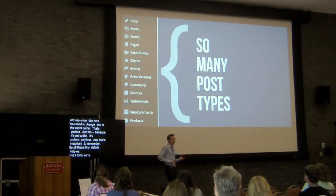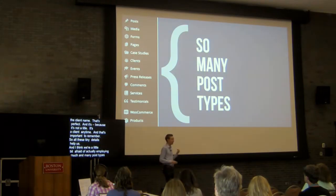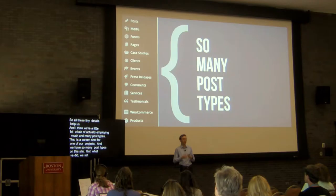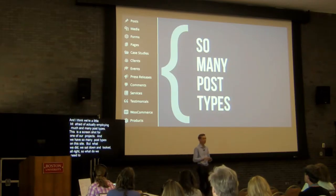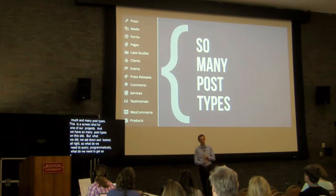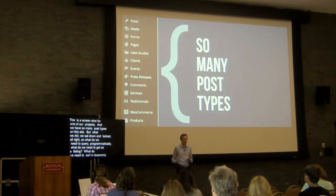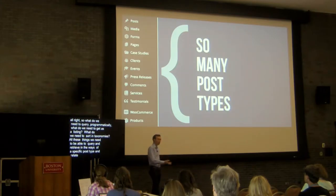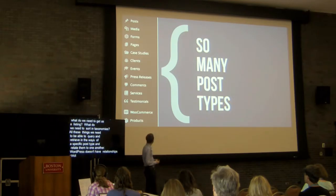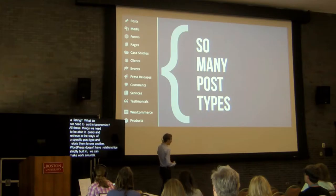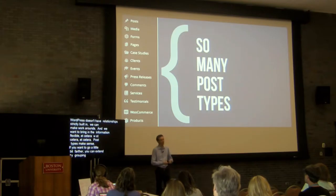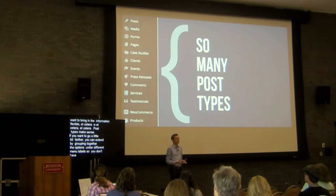I think we're a little bit afraid of actually employing many post types. This is a screenshot of one of our projects — we have so many post types on this site. What we did is sit down and look: what do we need to query programmatically? What do we need to get as a listing? What do we need to sort in taxonomies? All of these things we actually need to query and retrieve in ways specific to a post type. You could also extend this by grouping together the options under a different menu label so you don't have a huge array of menu labels for custom post types — all of that helps the client experience.